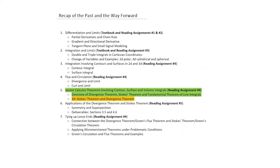After we've done that, we'll move to Reading Assignment 5, where we look at applying the Divergence and Stokes' Theorem in physical problems. Those physical problems include classical electromagnetic field problems, fluid flow problems, and heat transfer problems — a range of physical problems where the Divergence Theorem and Stokes' Theorem can be applied. That material comes from Section 3.5 and 4.6 of Reading Assignment 5.